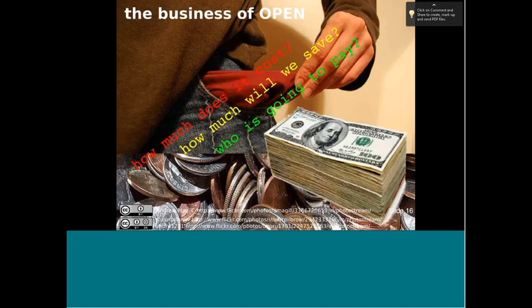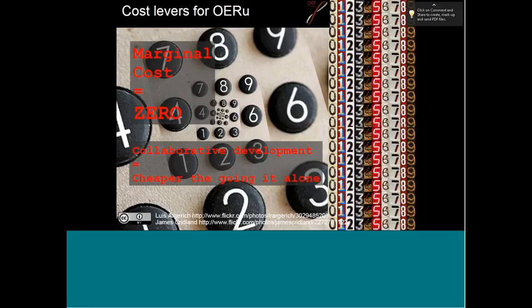What about the business model — how much is this going to cost and who is going to pay? There are two drivers which will ensure sustainability. The first is that the marginal cost of replicating digital knowledge or digital online courses is near zero. And the second driver, which is not rocket science: if 10 institutions work together and collaborate on developing high-quality courses, it's far cheaper than doing it alone.